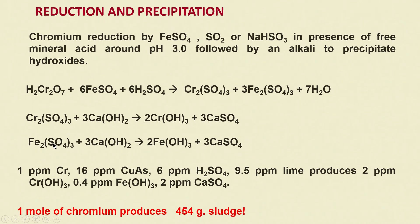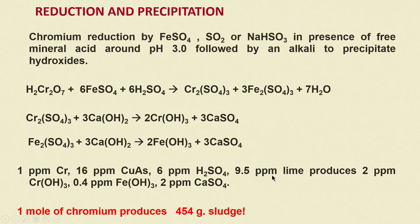Ferric sulphate also reacts with 3 moles of calcium hydroxide to give ferric hydroxide and calcium sulphate. For example: 1 ppm of chromium and 16 ppm of FeSO₄, 6 ppm of sulphuric acid, and 9.5 ppm of lime produces 2 ppm of chromium hydroxide, 0.4 ppm of ferric sulphate, and 2 ppm of calcium sulphate.